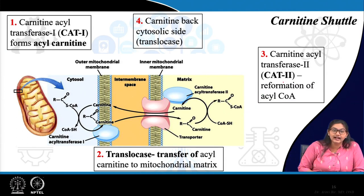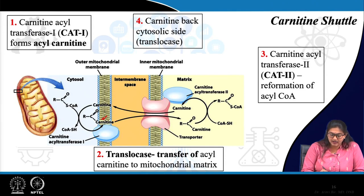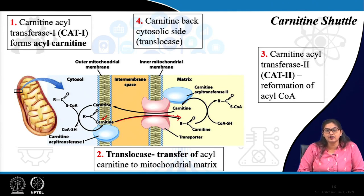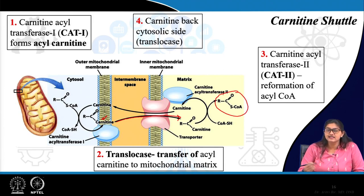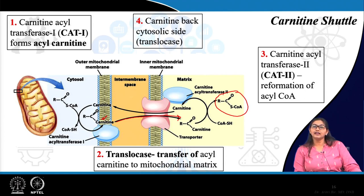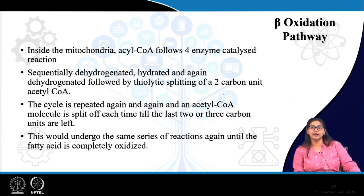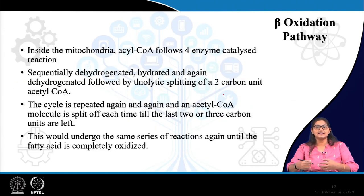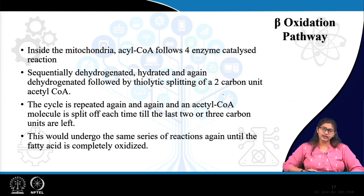To summarize the carnitine shuttle: acyl carnitine is formed with the help of CAT1, transported inside the mitochondrial matrix via translocase, then acyl CoA is reformed and carnitine transfers back through the intermembranous space to the outer mitochondrial membrane. The activated fatty acid is now inside the mitochondria.